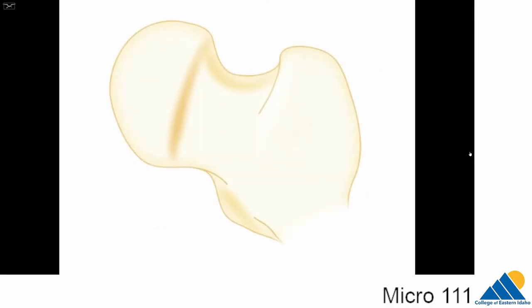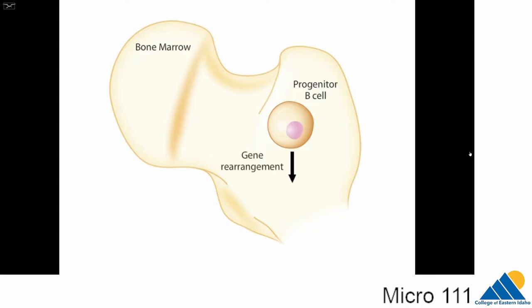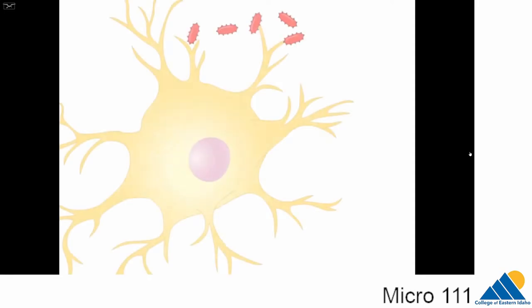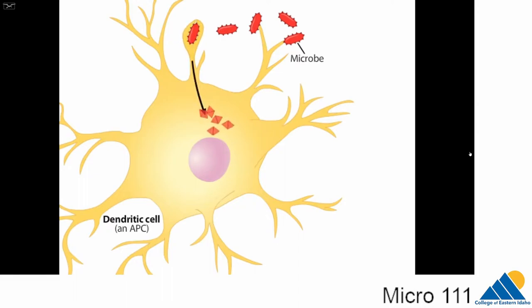First, B-cells are born in the bone marrow. In these progenitor B-cells, the genes that encode antibodies rearrange, allowing each mature B-cell to express antibodies with a particular antigen-binding specificity. For a robust response to most antigens, the action of T-cells and antigen-presenting cells is required. At the site of an infection, antigen-presenting cells, such as dendritic cells, engulf some of the microbes and digest them, putting the microbes' antigens on the cell's surface nestled in molecules called MHC2.